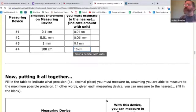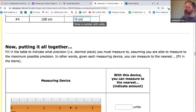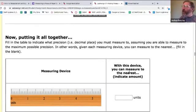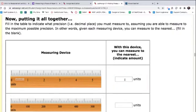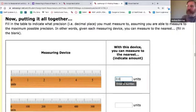Now we're going to put it all together and we'll see if we can get this. With this device, you can measure to the nearest what? Notice that, what's the smallest increment on this device? What are these tiny ones? 0.1. So that means we can estimate to the 0.01. You can estimate in between them.